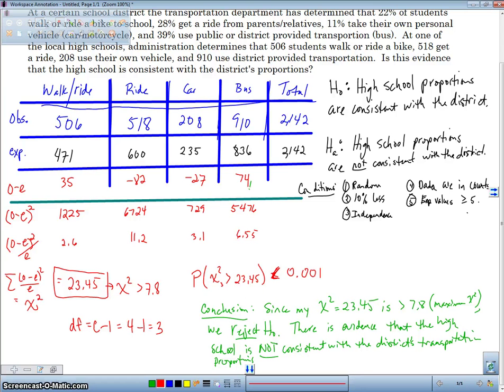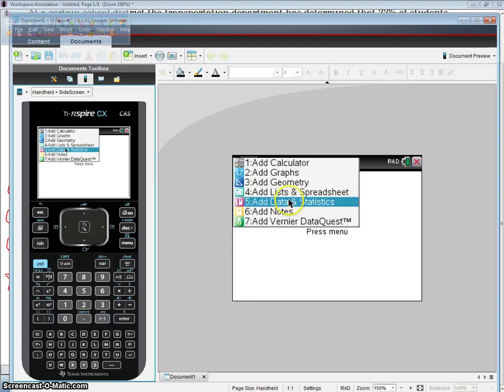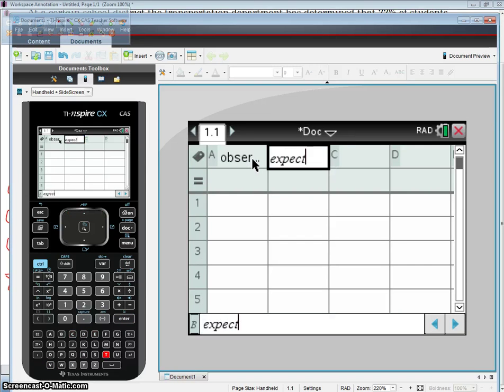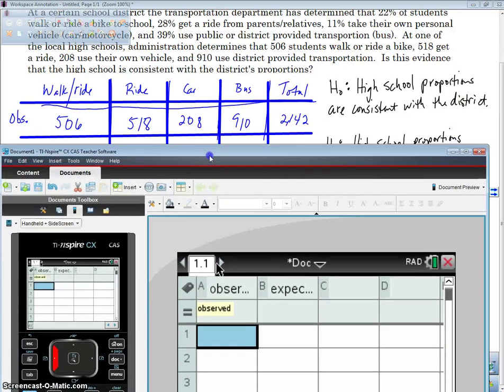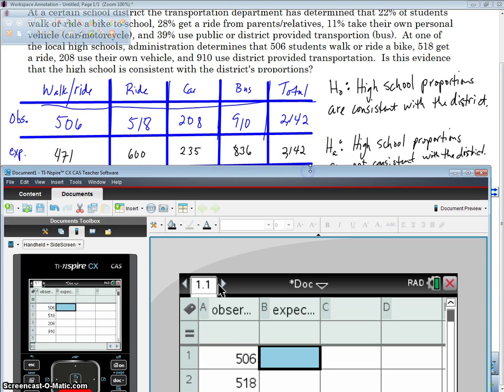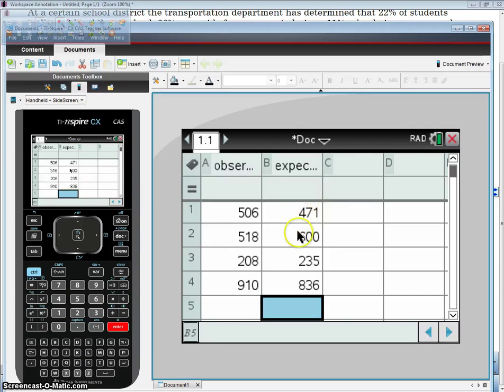I'm going to use my TI Inspire and go into List and Spreadsheets. I need to make two lists, one for my observed and one for my expected. I'm going to enter the values that I found: observed values of 506, 518, 208, 910, and expected values of 471, 600, 235, and 836. So I entered in my expected and observed values.